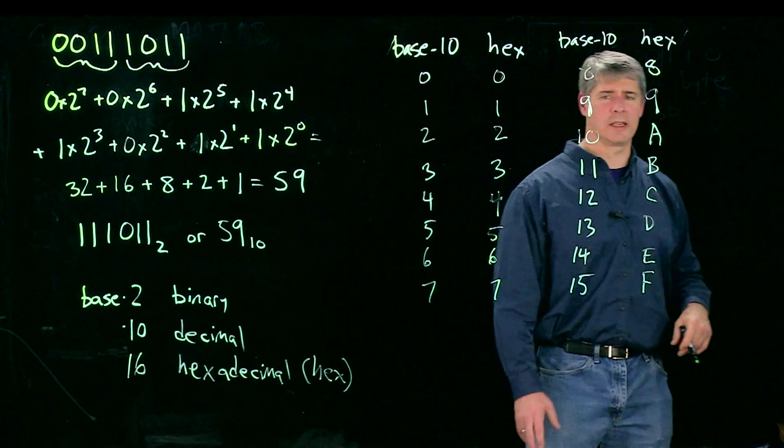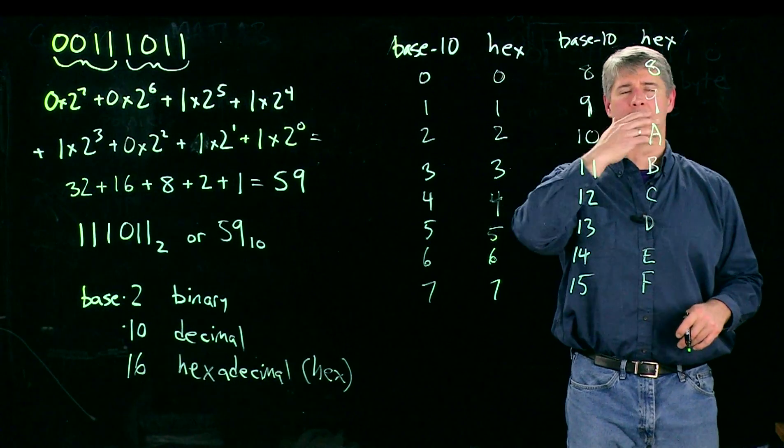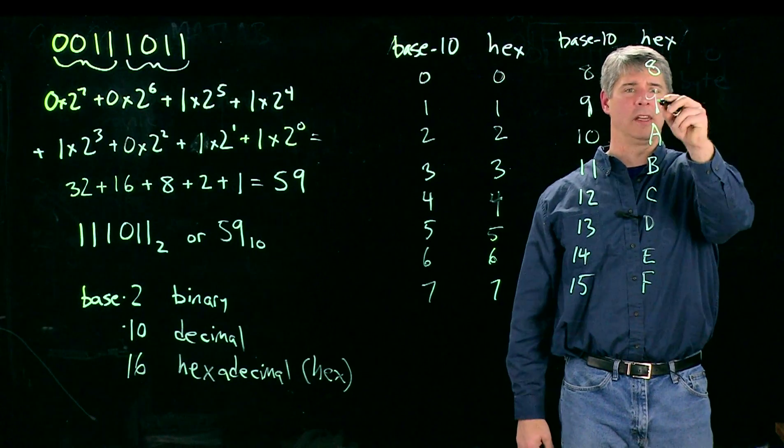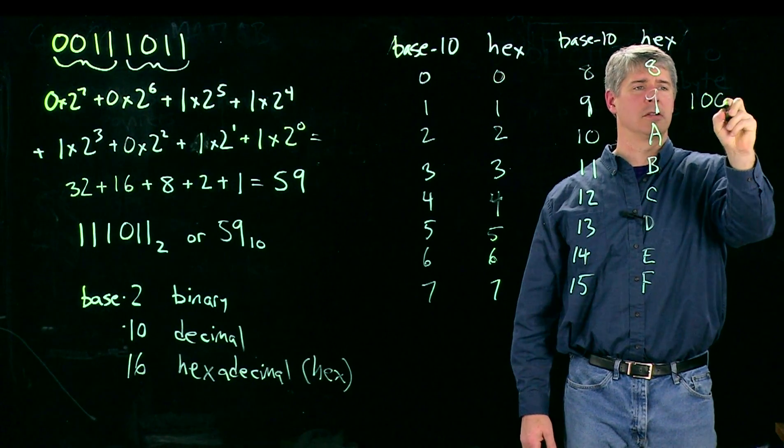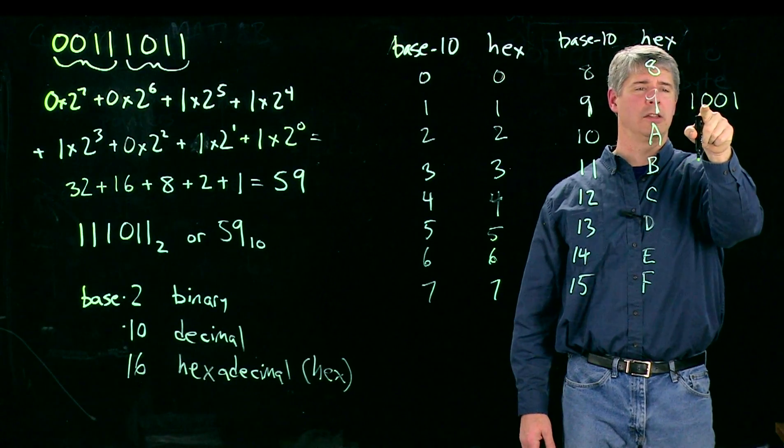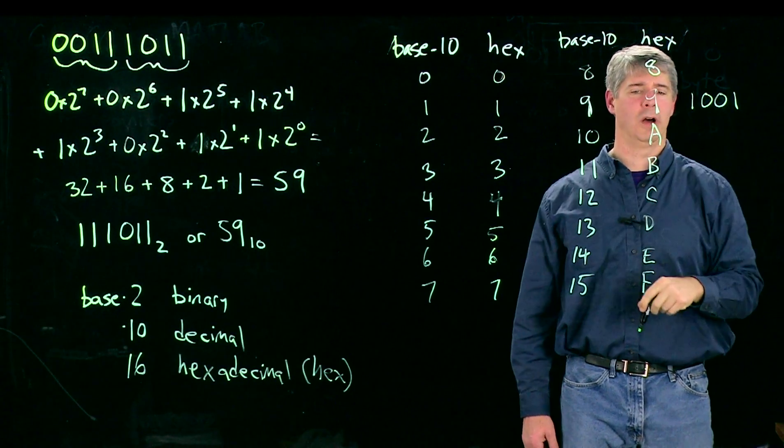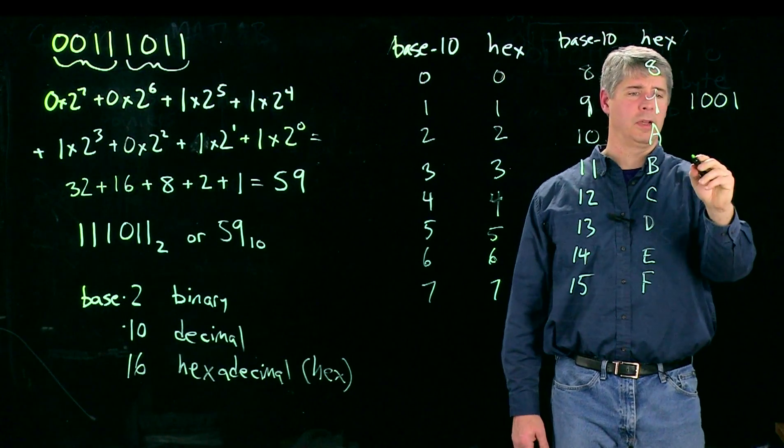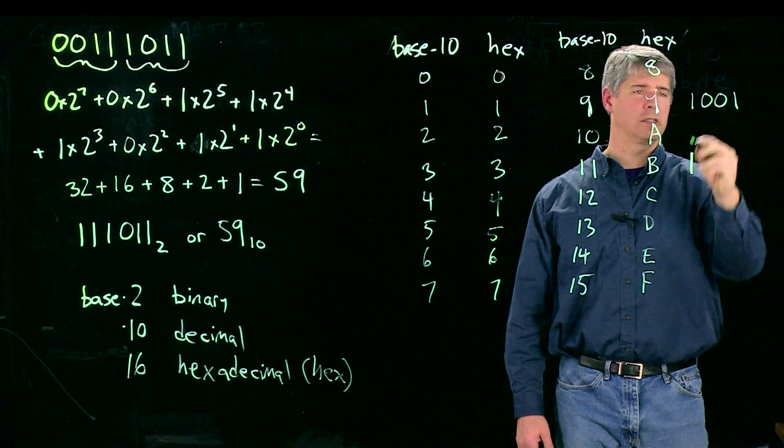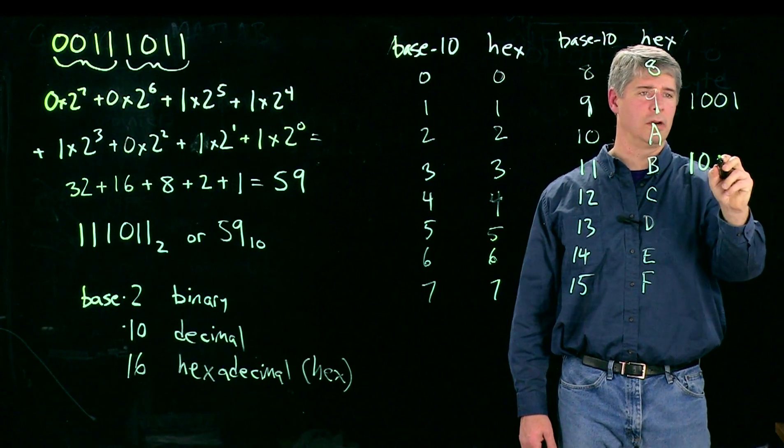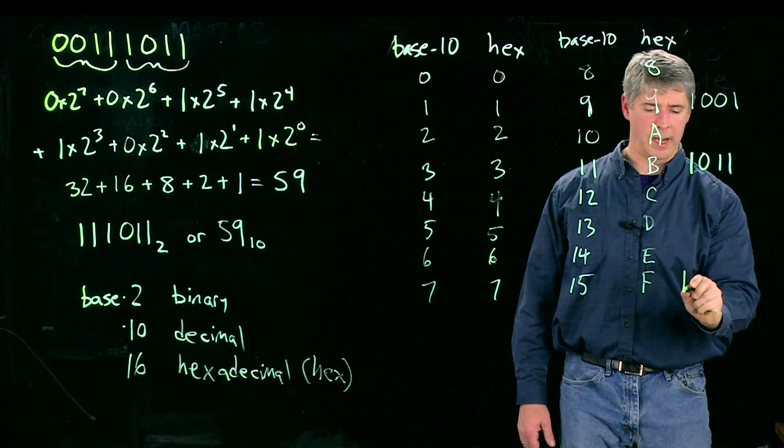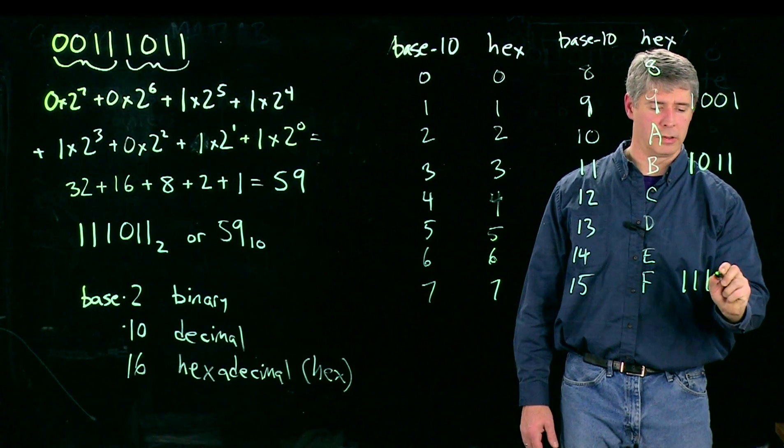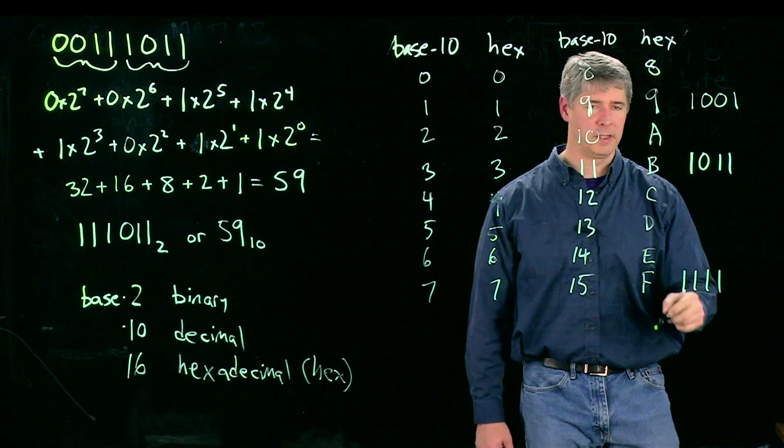And we can take some of these and write them in binary notation. For instance, the 9 here in binary would be 1001. We've got an 8, no 4s, no 2s, and a 1. B here, we'd have this plus a 2, so 1011. And F here, we've got an 8, a 4, a 2, and a 1, adding up to 15 or F, which is 1111.